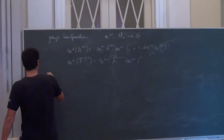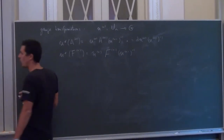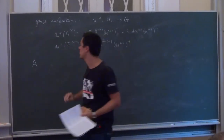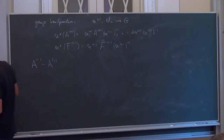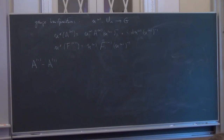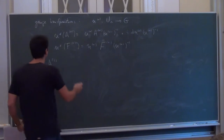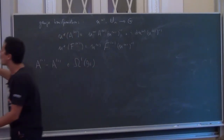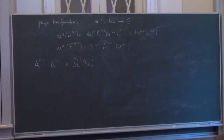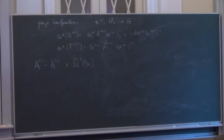If you take the difference of two gauge connections, the extra term drops and the difference belongs to Ω¹(g_P) — it transforms under trivialization changes exactly like the curvature, but it is a one-form rather than a two-form. This will be relevant for infinitesimal deformations of the connection later.